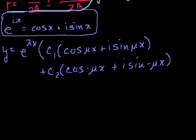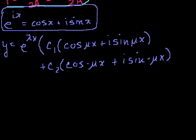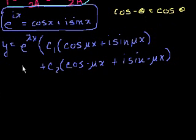And now we could use a little bit about what we know about trigonometry, right? Cosine of minus theta is equal to cosine of theta. And we also know that sine of minus theta is equal to minus sine of theta.